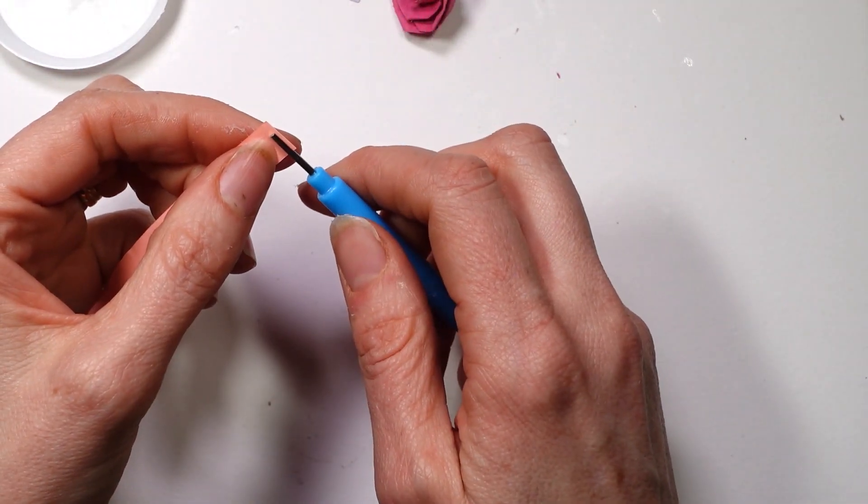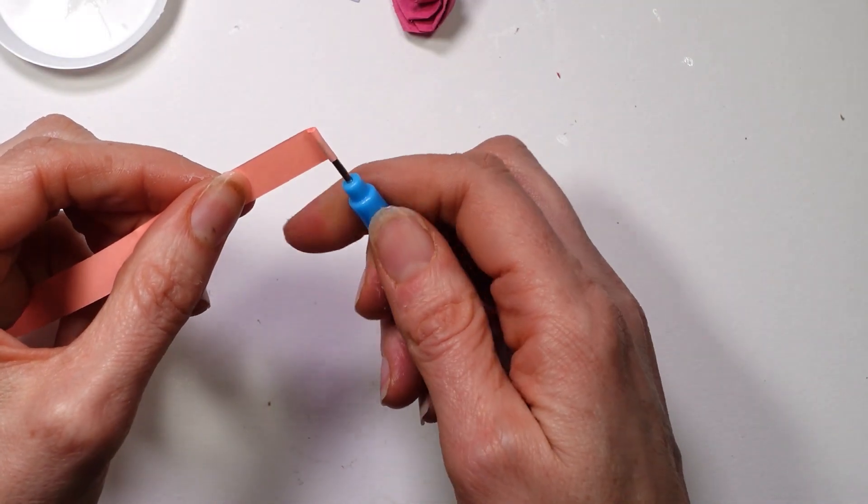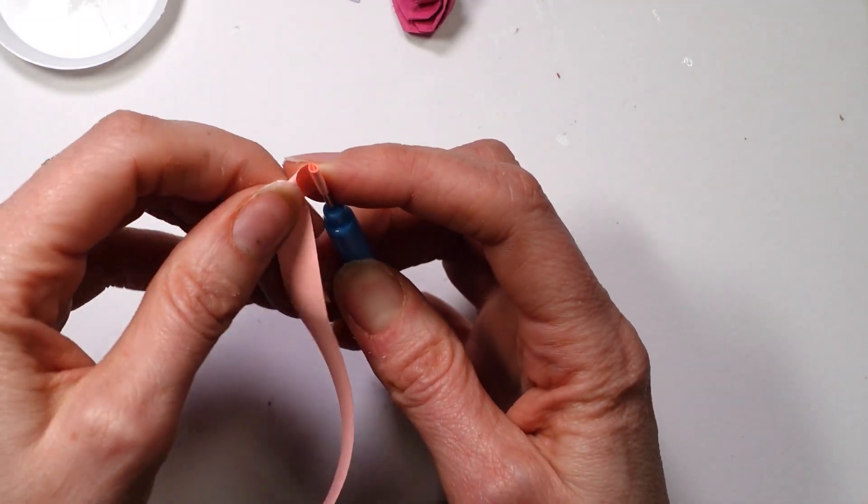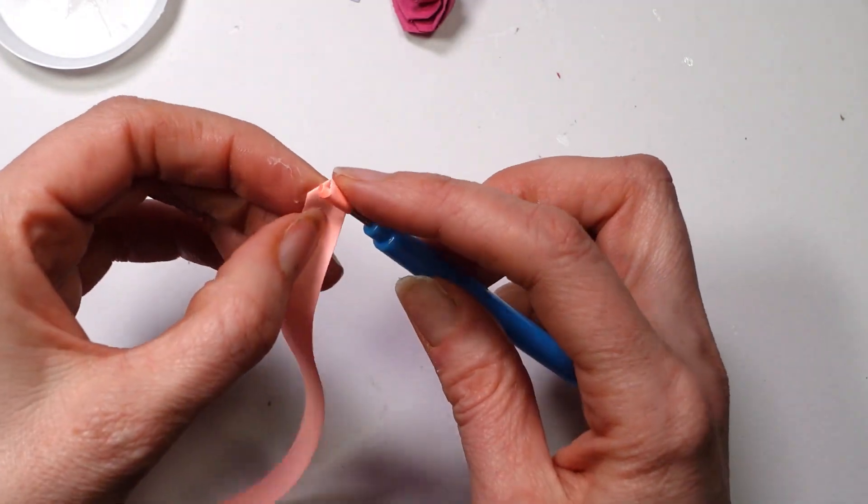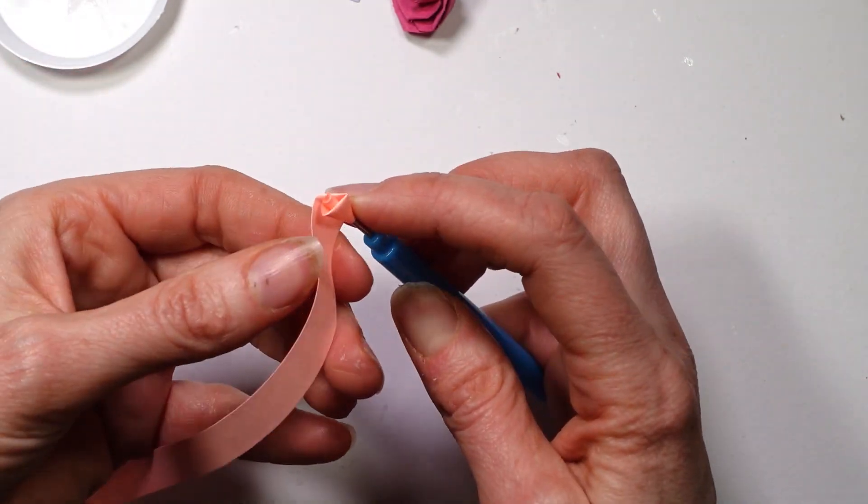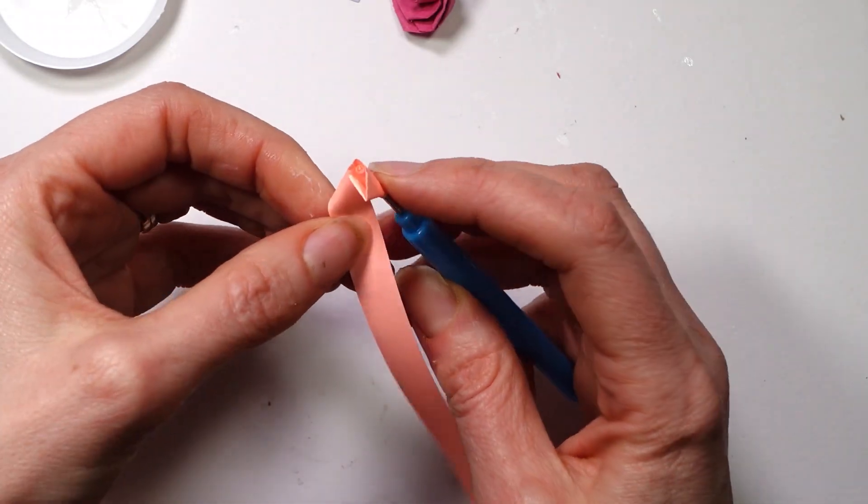Put your paper into your slotted quilling tool and roll it around three times. Then fold the paper down really close to the edge and roll. Fold it down a little bit further away and roll.